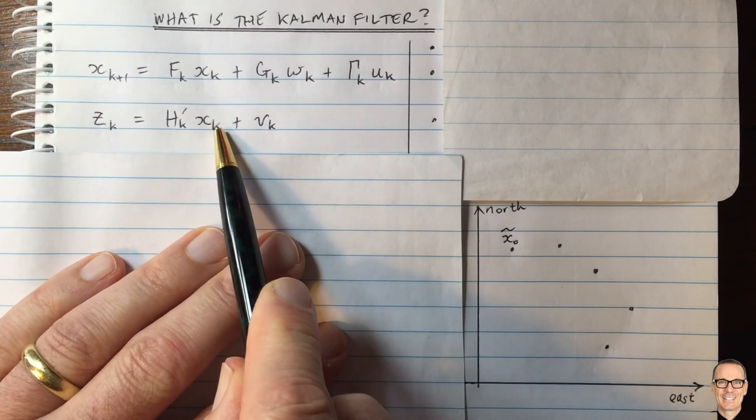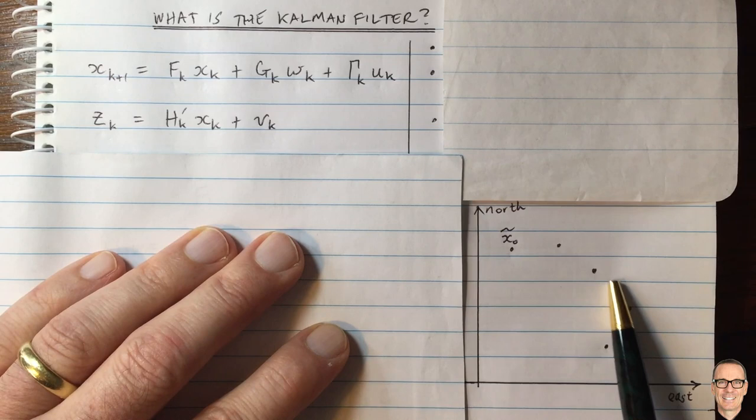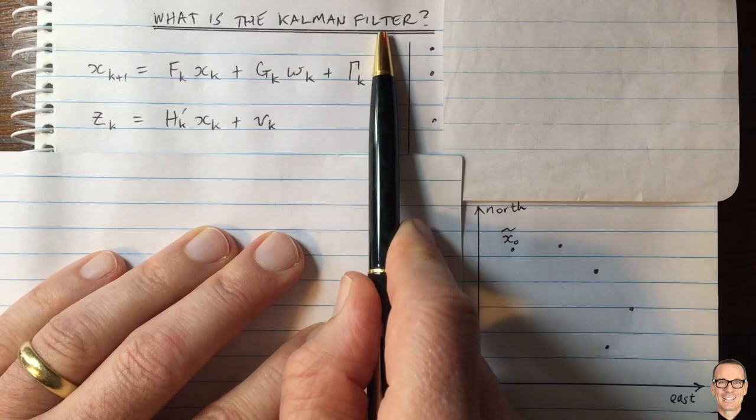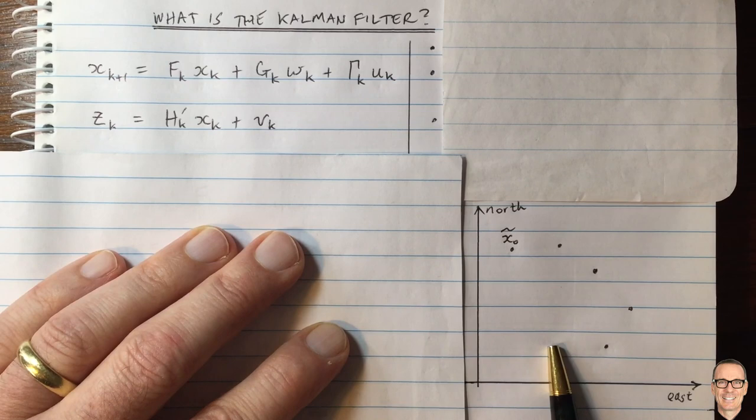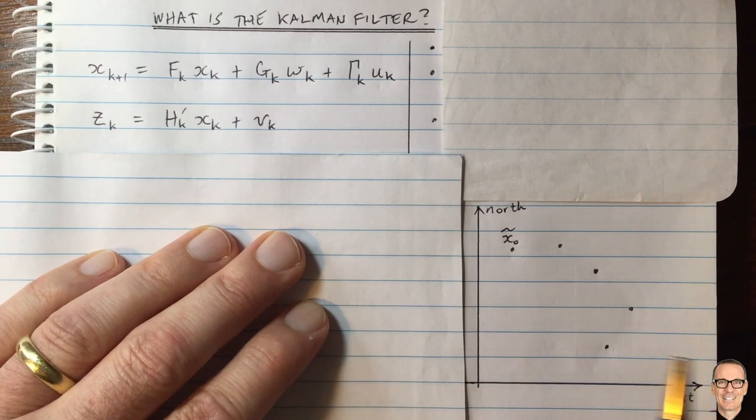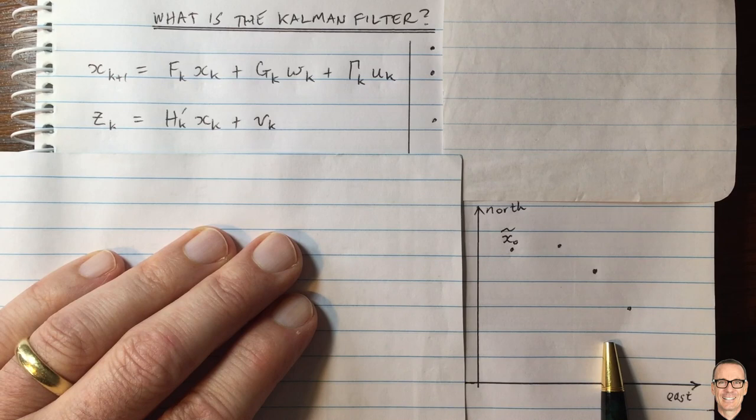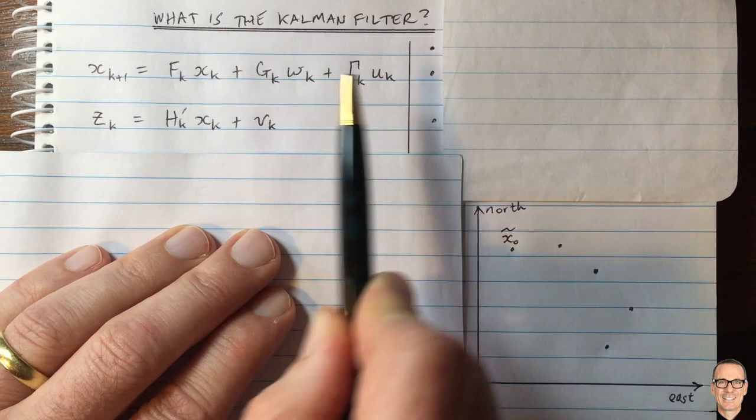We're going to ask ourselves questions like: if it has moved from here to here, where is it going to move next? Can we predict, using the Kalman filter, where it's going to go next? And can we get a good estimate for where it is after we make our next observation? In this example, the deterministic input would be the controls the captain of the ship has applied. The W might be the waves and the wind, which are disrupting the movement of the ship.